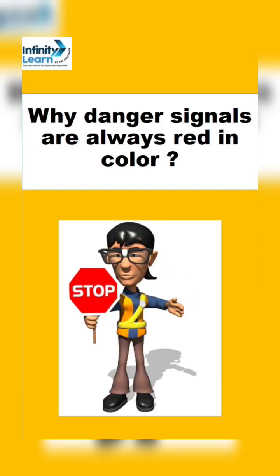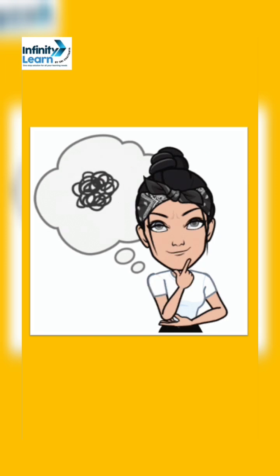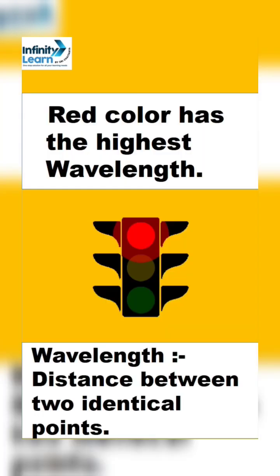Do you know the reason why danger signals are always red in color? Make a guess. This is due to the phenomena of scattering of light. Scattering of light is a phenomena in which the straight path of light gets deviated when it hits objects that are present in the atmosphere such as molecules of gas, dust, water vapors, etc.